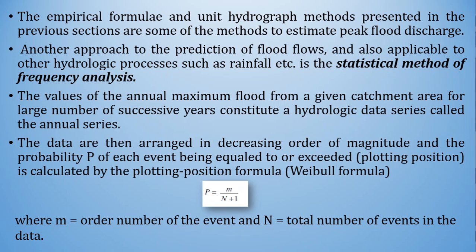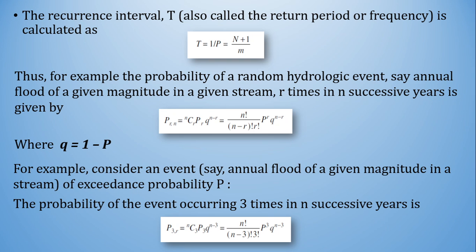Suppose your data constitutes 40 events, that is N = 40, and if you are considering the second event, then m = 2. The recurrence interval T, also called the return period or frequency of the flood, is calculated as T = 1/P = (n + 1) / m.